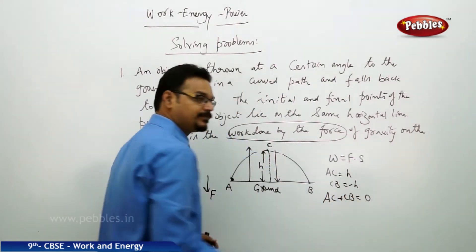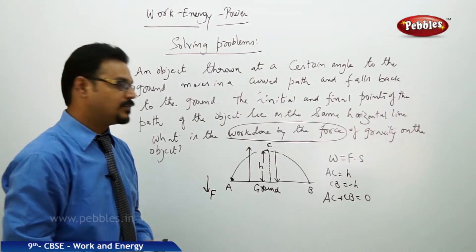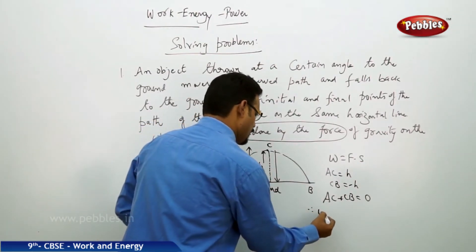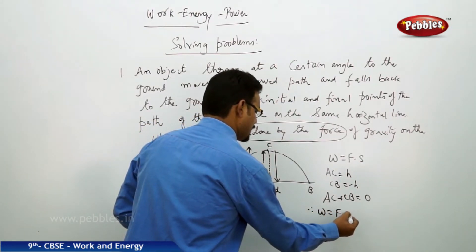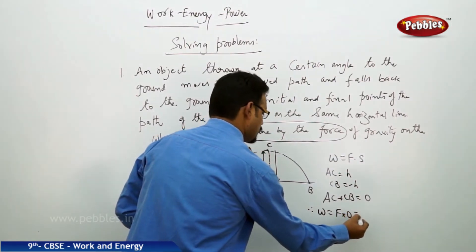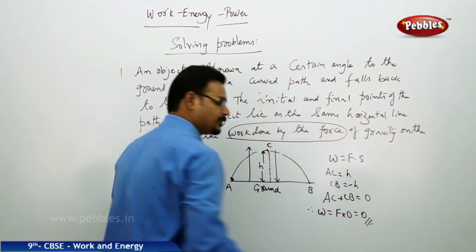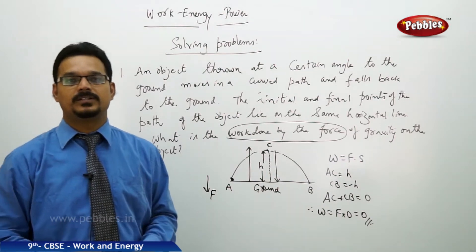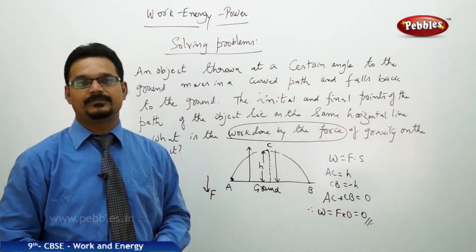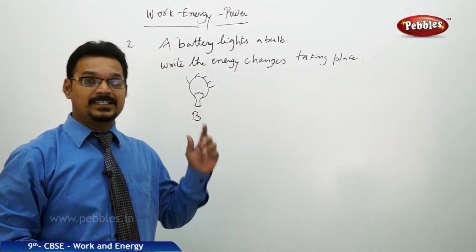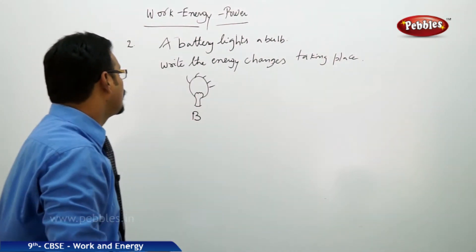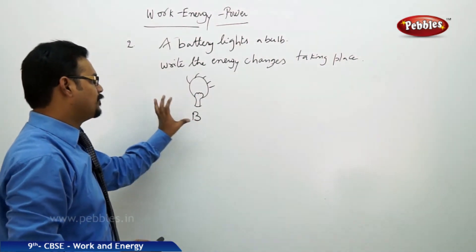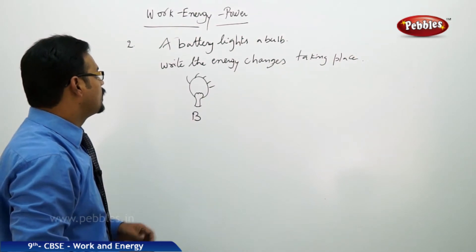The total displacement is AC plus CB, which equals zero: H minus H equals zero. Therefore, the amount of work done by the force of gravity is F into zero, which equals zero. So there is no amount of work done by the force of gravity.